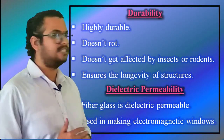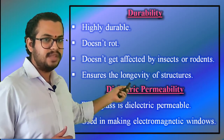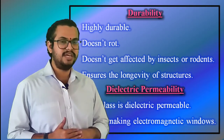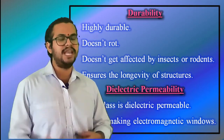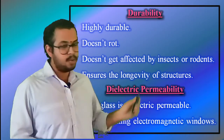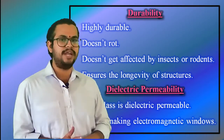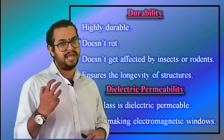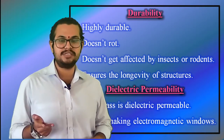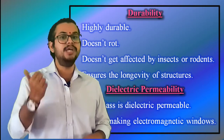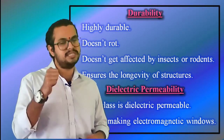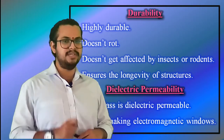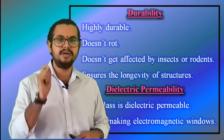Dielectric permeability: fiberglass is dielectrically permeable, and as a result it can be used in the making of electromagnetic windows. With this, we have gained a basic knowledge about all the properties of glass fibers: mechanical strength, electrical characteristics, dimensional stability, thermal conductivity, incombustibility, compatibility with organic materials, durability, and dielectric permeability.